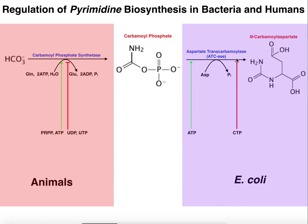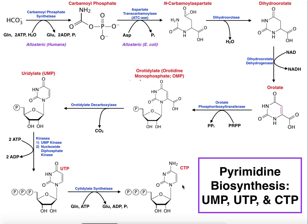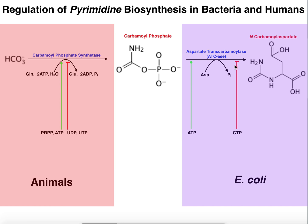ATCase is also negatively regulated by CTP, which makes sense since CTP is another end product of this pathway. If you've already gone through this pathway and have plenty of CTP, it's assumed you also have plenty of UTP, since UTP is converted into CTP. So CTP will feedback-inhibit this enzyme allosterically and turn off pyrimidine synthesis — you've already got plenty of pyrimidines, so turn off the committed step in pyrimidine biosynthesis.